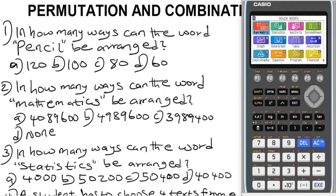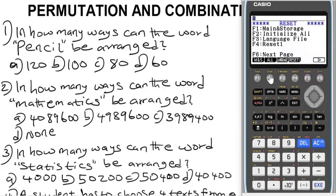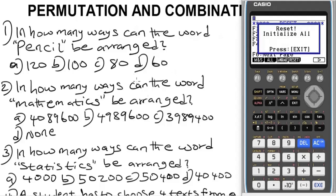Now, the very first thing you have to do is to reset the calculator. The essence of resetting it is to wipe out whatever previous values might have been stored in the calculator. To quickly reset, navigate the system using the navigation button, then press the EXE key — which stands for equal to on this calculator. Press F5 for reset, then press F6 for next page, then press F2 to initialize all, then press F1 and it will begin to initialize all, as indicated. Press exit when done.